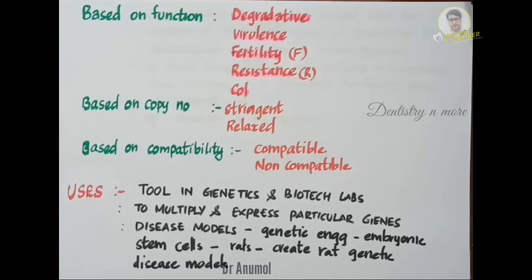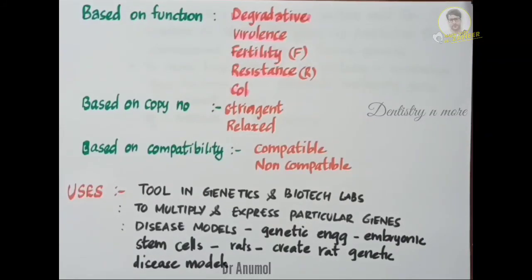Next are col plasmids. They contain genes that code for bacteriocins and toxins that can kill other bacteria. Example: col E1.